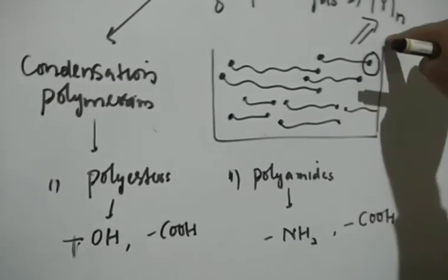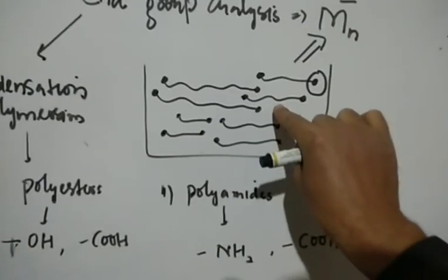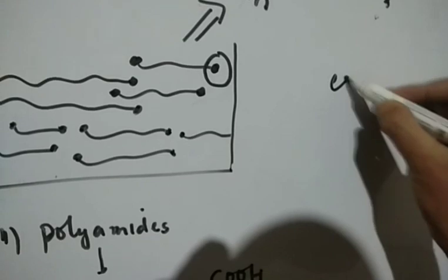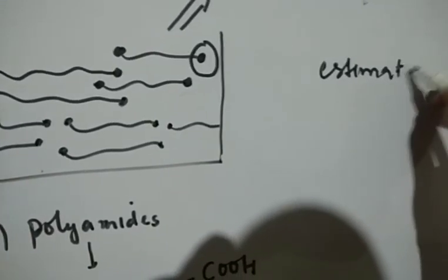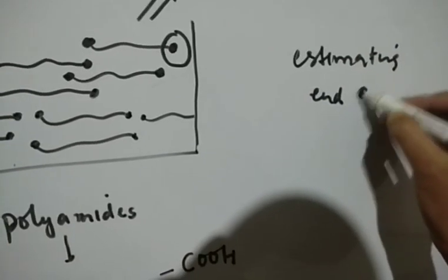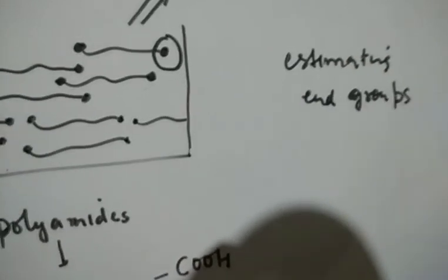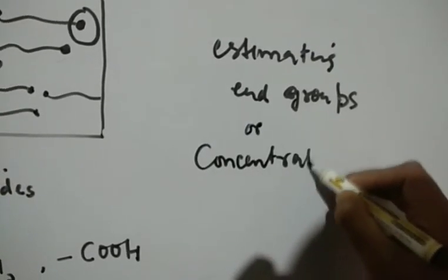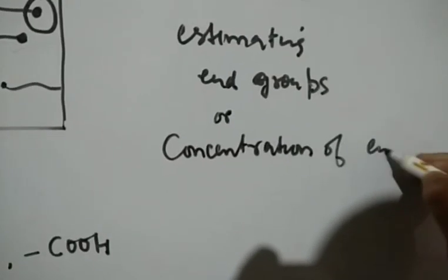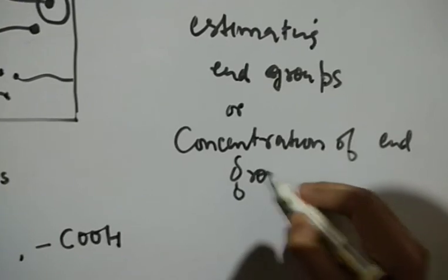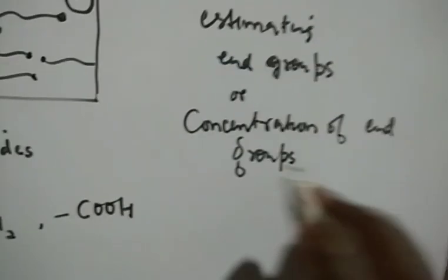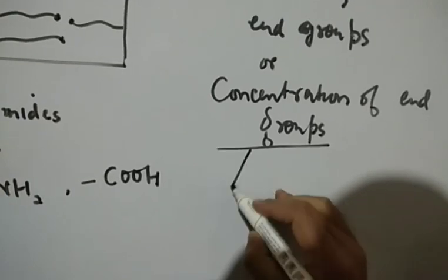What we do is estimate these end groups — specifically the concentration of end groups in a polymer sample: how many end groups are present. We determine this concentration either by physical methods or by chemical methods.